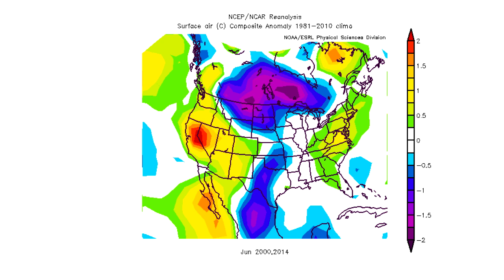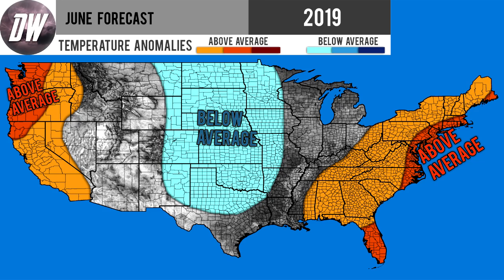Now we're going to look at my analog years — 2000 and 2014 — and you can see warmer on the two coasts and then colder for the central United States. Everything isn't placed perfectly for what my forecast was, but nevertheless, again colder in the central United States and warmer on the two coasts. And here's another look at my June forecast — it looks quite similar: warmer on the two coasts, colder in the central United States.